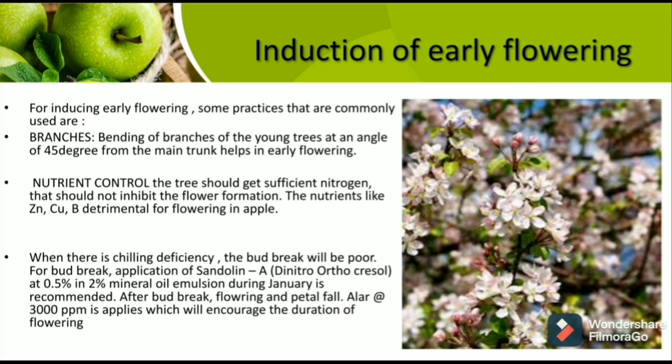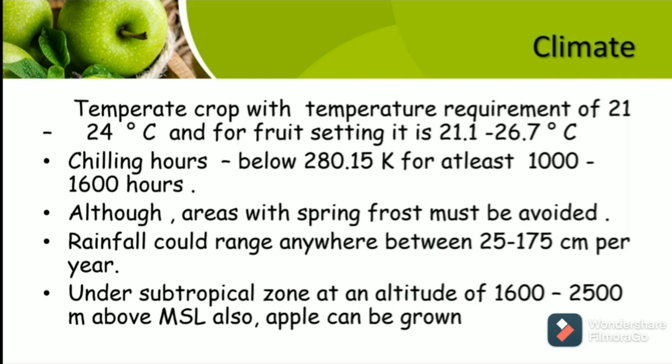Regarding climate, apple is a temperate crop with a temperature requirement of 21 to 24 degrees Celsius. For fruit setting, it is 21.1 to 26.7 degrees Celsius. Chilling requirement is below 7 degrees Celsius (280.15 Kelvin) for at least 1,000 to 1,600 hours, although areas with spring frost must be avoided. Rainfall should range between 25 to 175 cm. Under subtropical zones at an altitude of 1,600 to 2,500 meters above mean sea level, apple can also be grown.